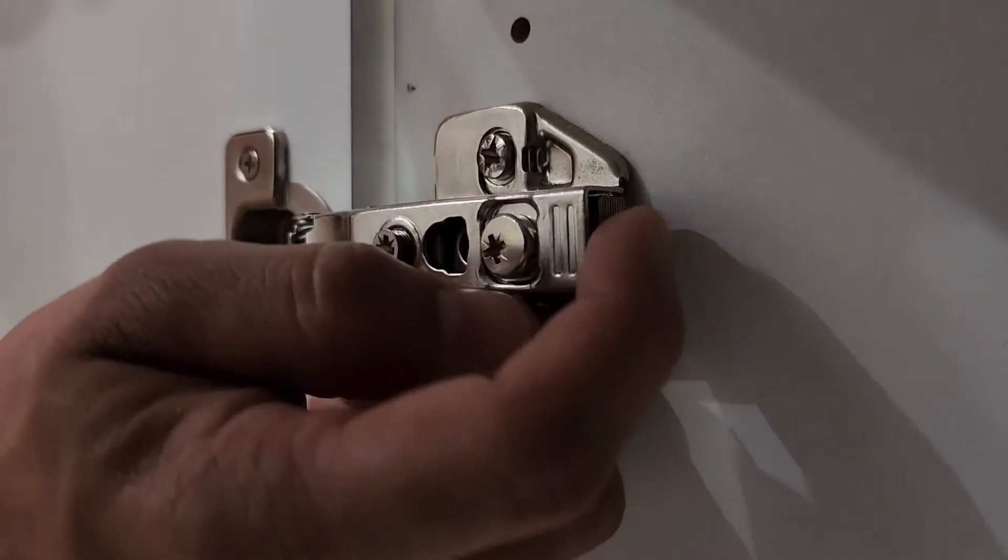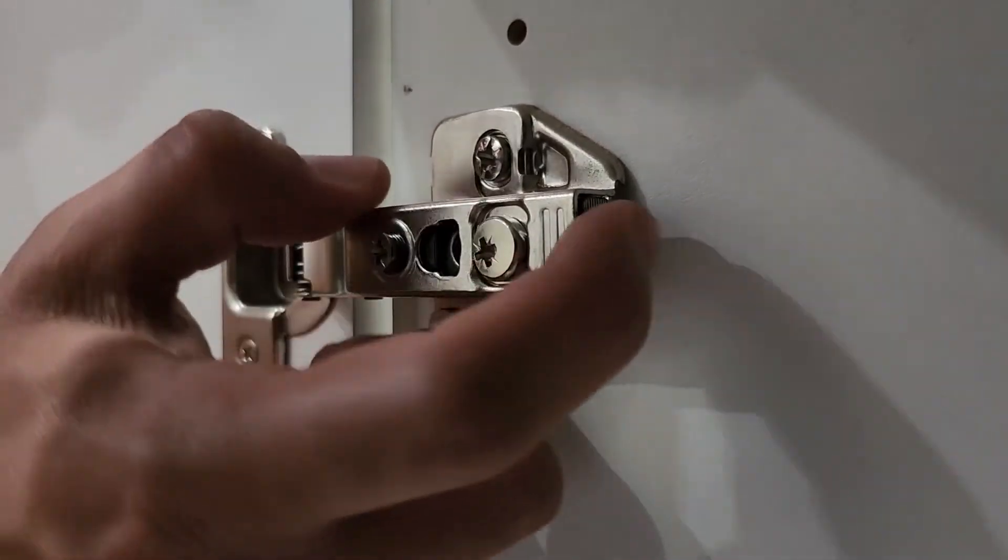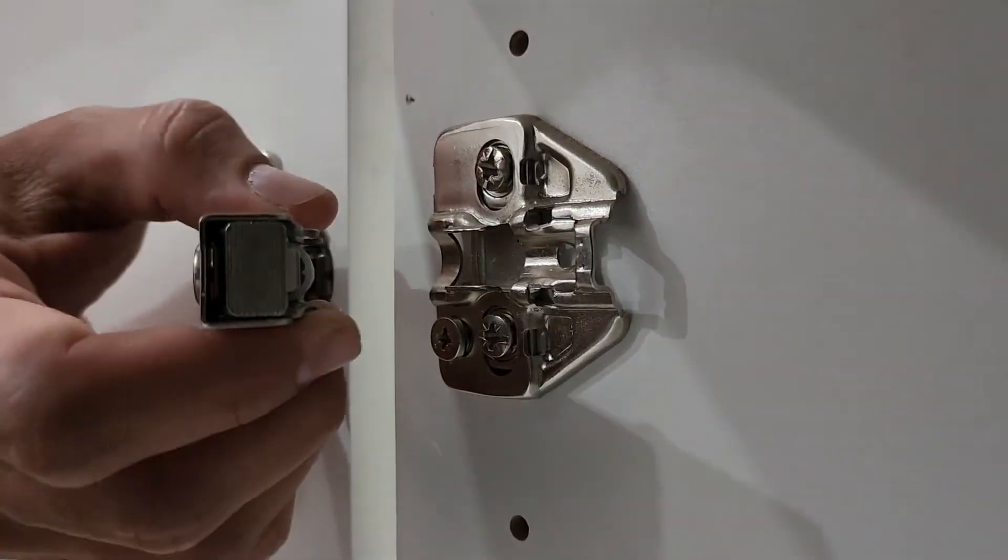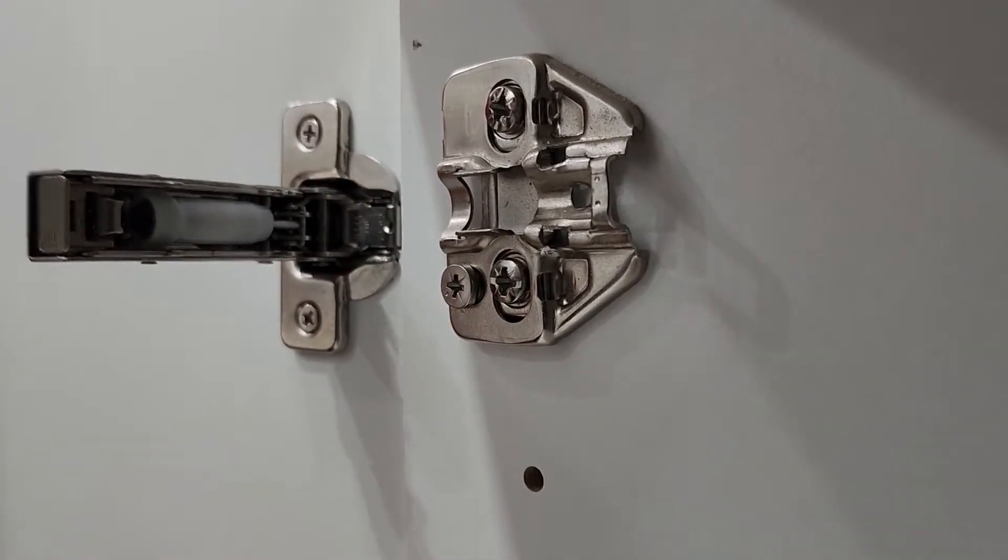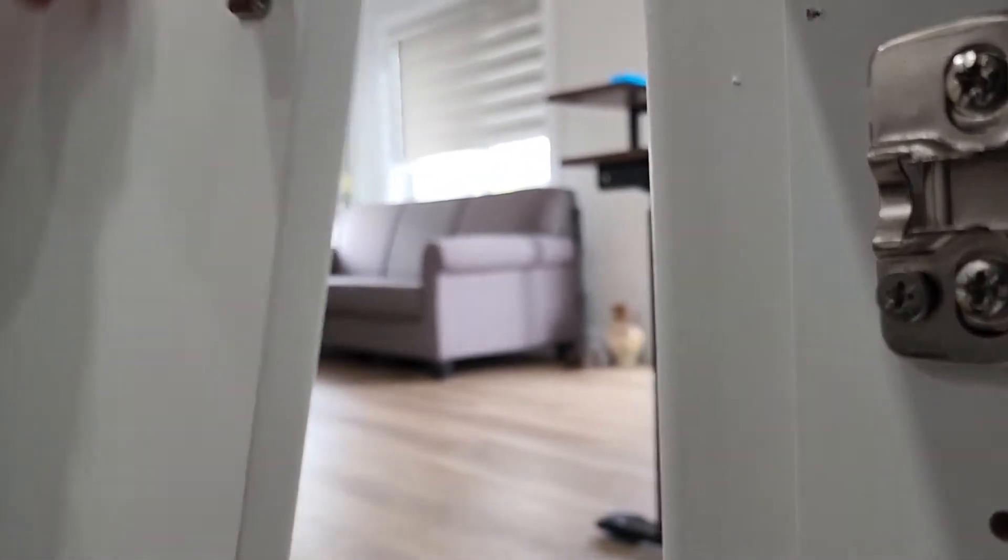To remove the door, at the back if you see there's a button. When you press it, it unhooks the door. Same thing you do with the bottom hinge. When you do that, it will unhook and you can remove the door.